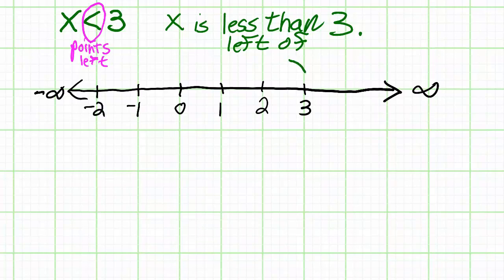Okay, let's graph this. I'll be using a parenthesis through 3, and then an arrow going off to the left.